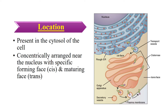The cisternae facing away from the nucleus, or towards the plasma membrane, are known as the trans face of the Golgi apparatus. Any protein or lipid that enters the Golgi body enters from the cis face and exits through the trans face.